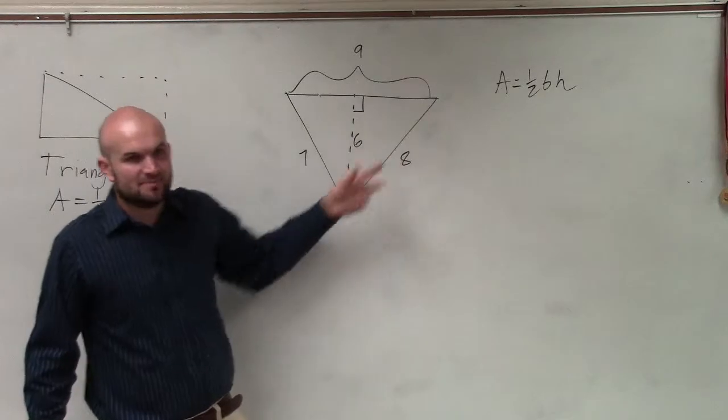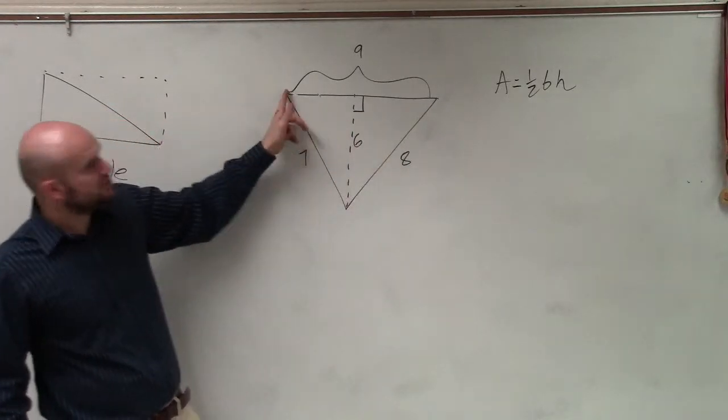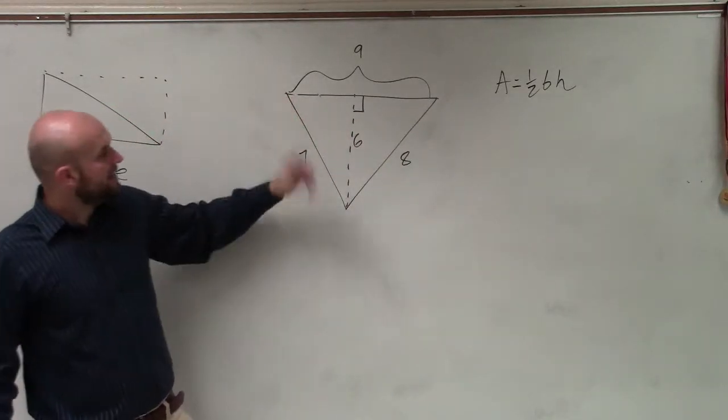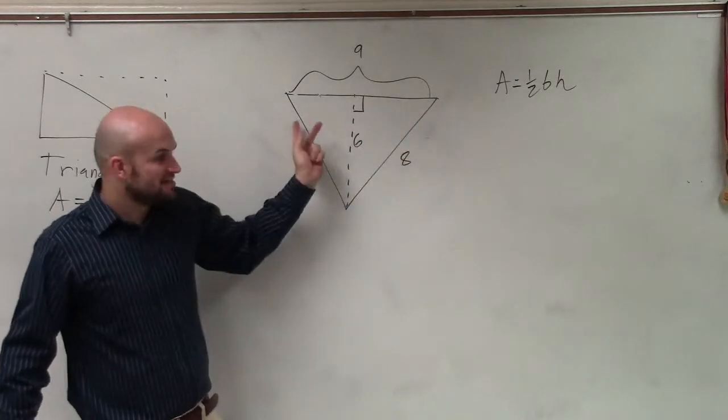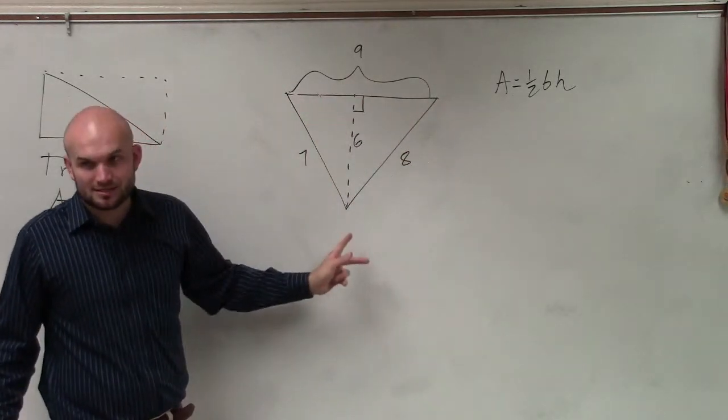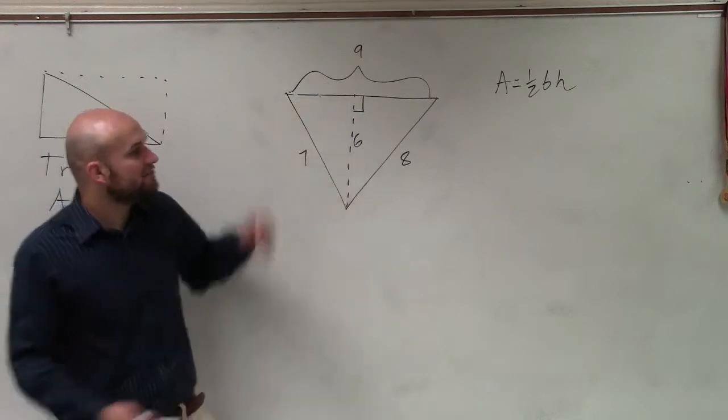If I said eight was the base, do we know the distance from the base to the top? No. If I said nine was the base, do we know the distance from the base to the other end? Yes, right? So therefore, we're going to say area equals one half nine times six.